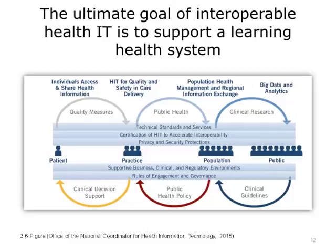The ultimate goal of interoperable health IT is to support a learning health system. This diagram shows the health IT ecosystem as a learning health system, illustrating interoperability between a patient's personal health record, an EHR, health information exchanges, and large-scale analytic systems for the purpose of determining and sharing clinical guidelines, informing public health policy, and supporting clinical decisions. In a learning health system, information is securely shared across the ecosystem with the ultimate goal of supporting effective decision-making and improved health outcomes.